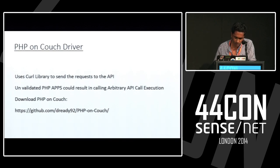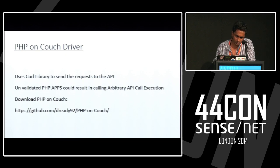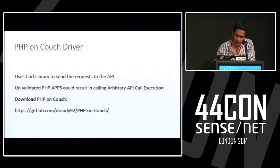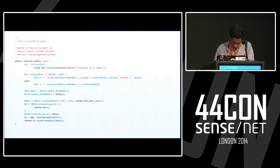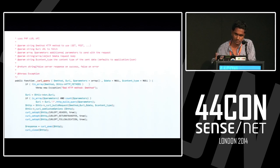PHP on CouchDB is a driver developed for CouchDB. It uses a code library to send requests to the API since Couch uses the HTTP REST API. Unvalidated PHP apps could result in arbitrary API call execution. The problem is that the APIs were not secure — they do not perform any validation, so you could use certain commands within the API calls to access certain resources. The vulnerability lies in that the PHP-on-Couch driver passes the query and test directly to the code library, which then executes it.